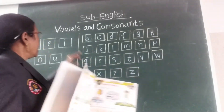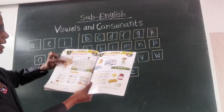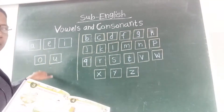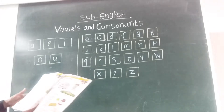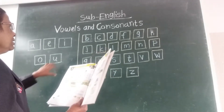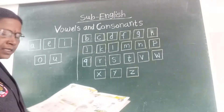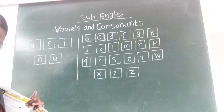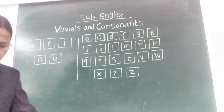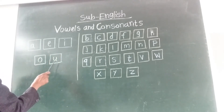How many vowels are there? Five vowels. And consonants — how many? Twenty-one. Look here carefully: A-E-I-O-U.